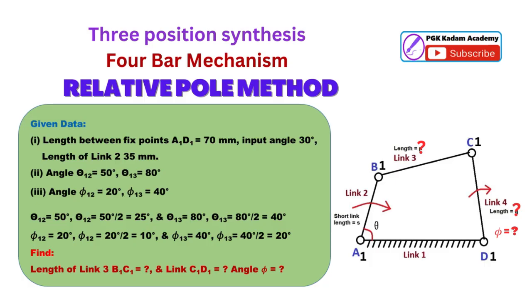As given angle theta 1-2 equal to 50 degrees, theta 1-2 by 2 equal to 50 degrees by 2 equal to 25 degrees. As angle theta 1-3 equal to 80 degrees, theta 1-3 by 2 equal to 80 degrees by 2 equal to 40 degrees. Angle phi 1-2 equal to 20 degrees.